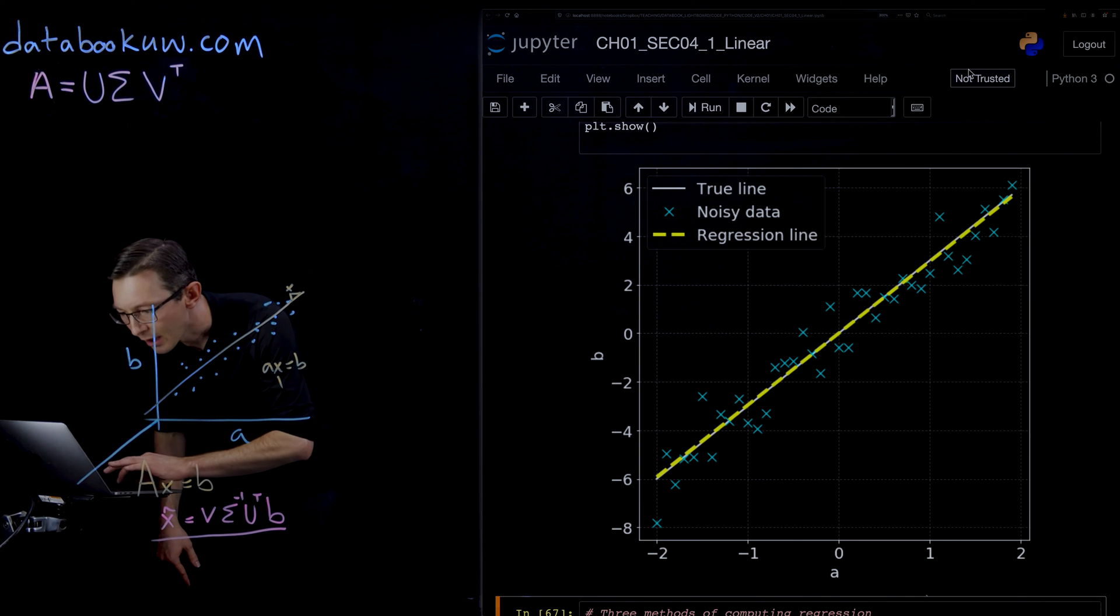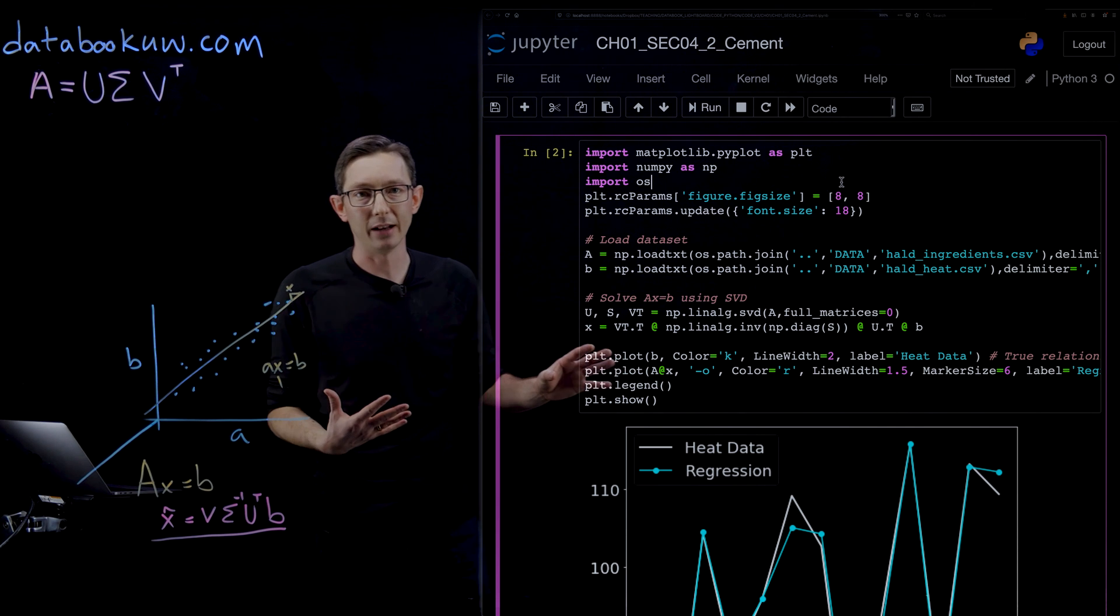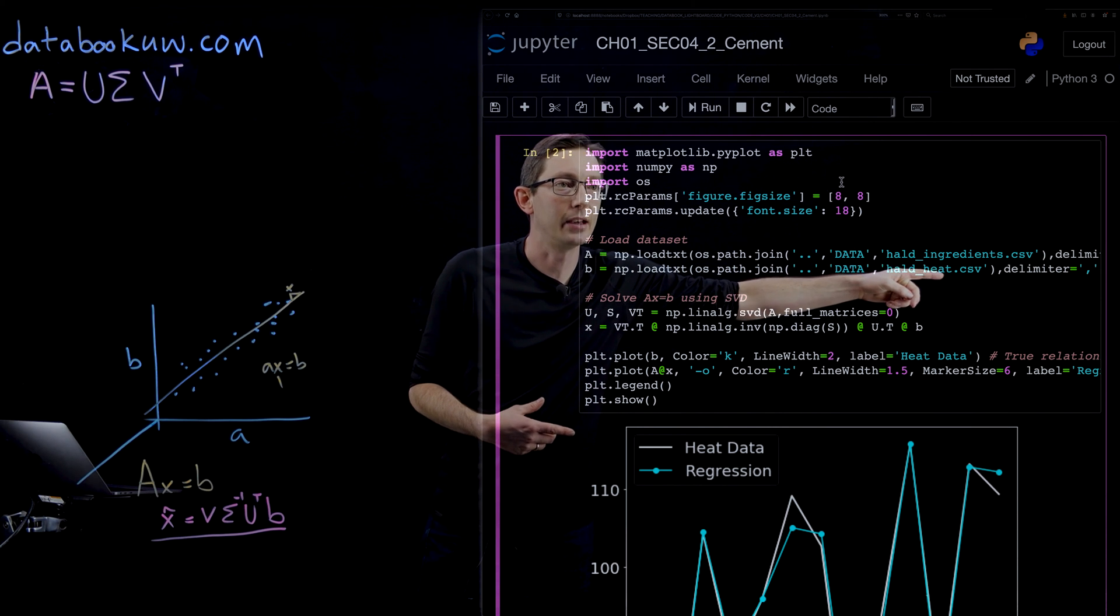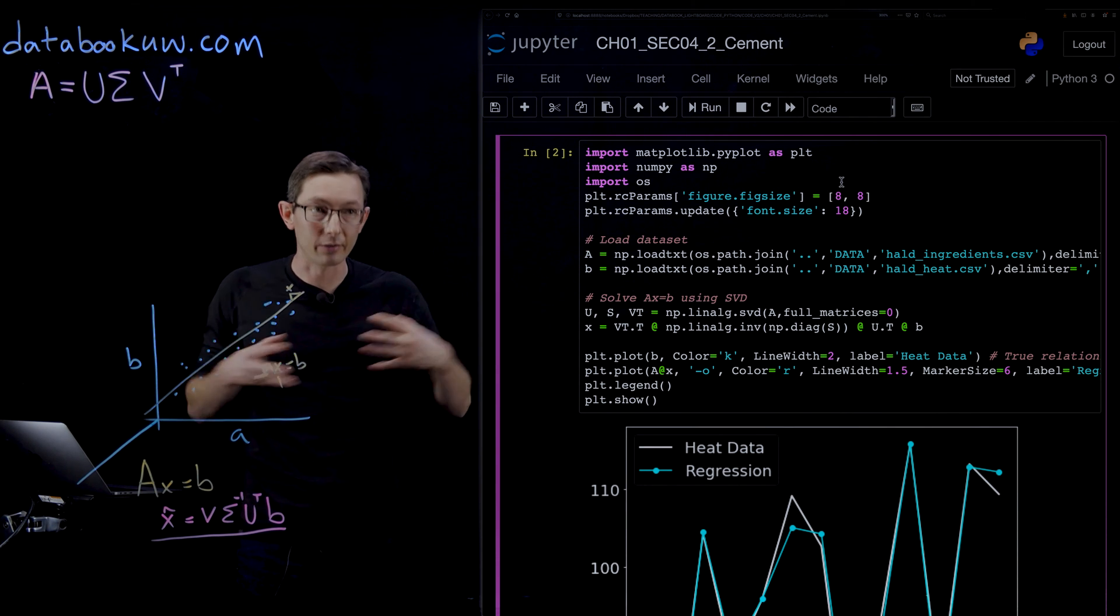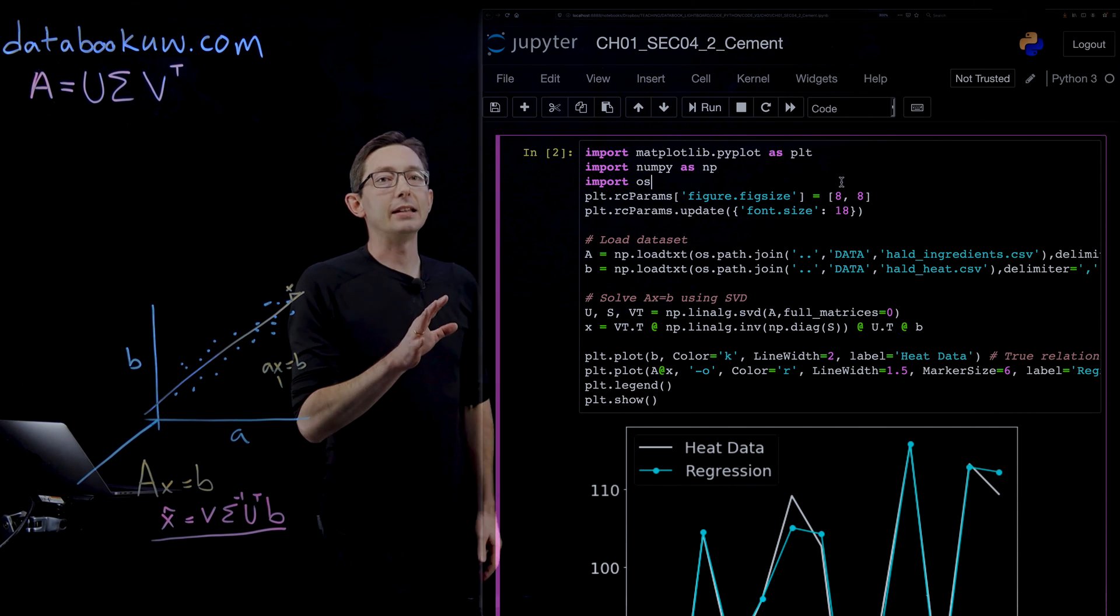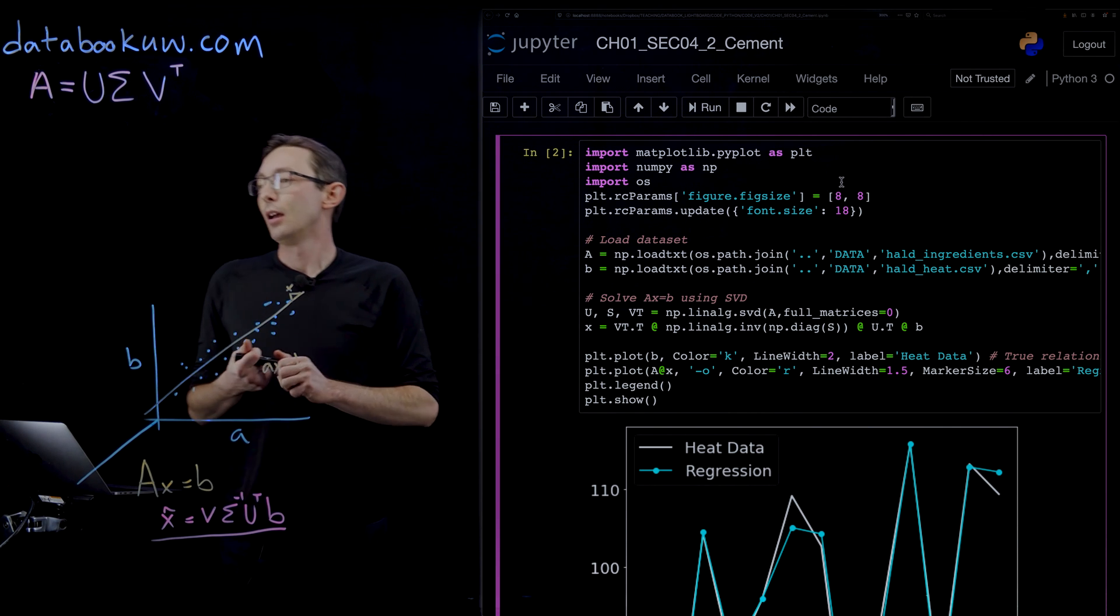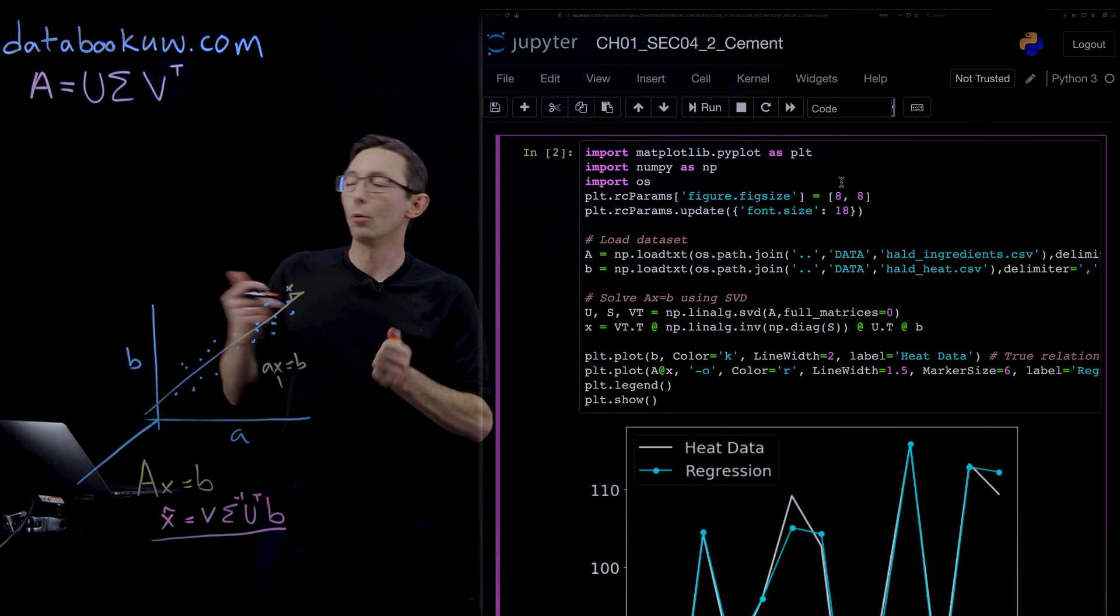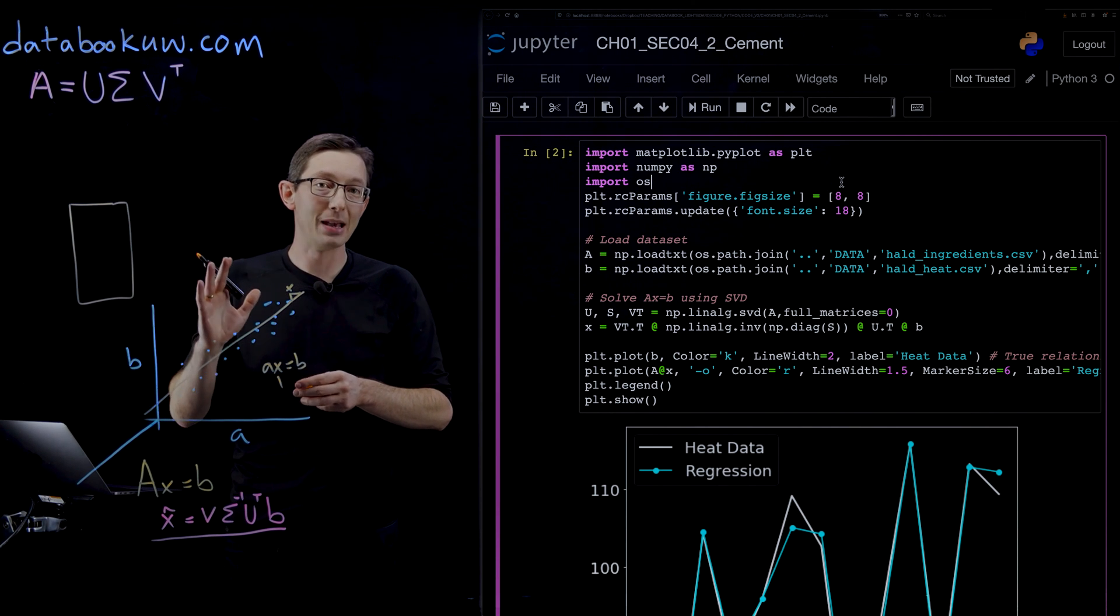You can do this in a simple example. In this next example we're going to load Portland cement data from this data folder. This is a built-in example in MATLAB that we have converted into a CSV file. The idea is when you mix concrete it gets hotter—it generates heat.